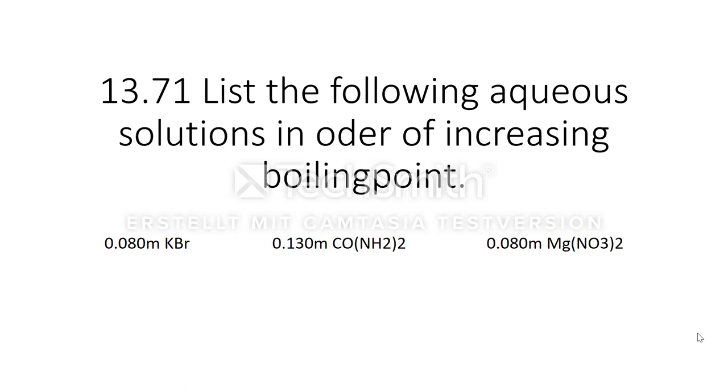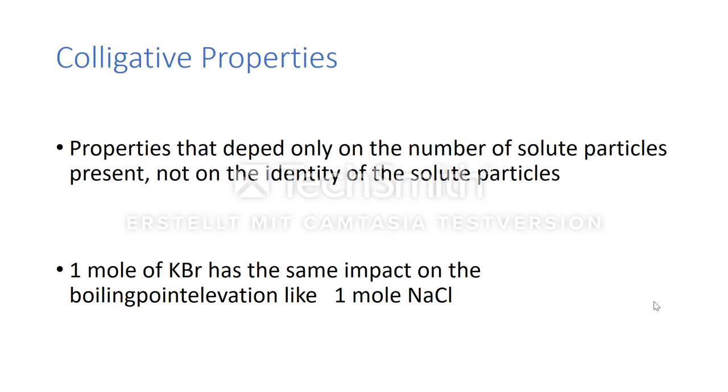The first question that comes to mind is, what actually affects the boiling point? This can be explained with the principle of colligative properties. This principle simply states that only the amount of molecules that are put in water, for example, have an impact on the boiling point elevation.